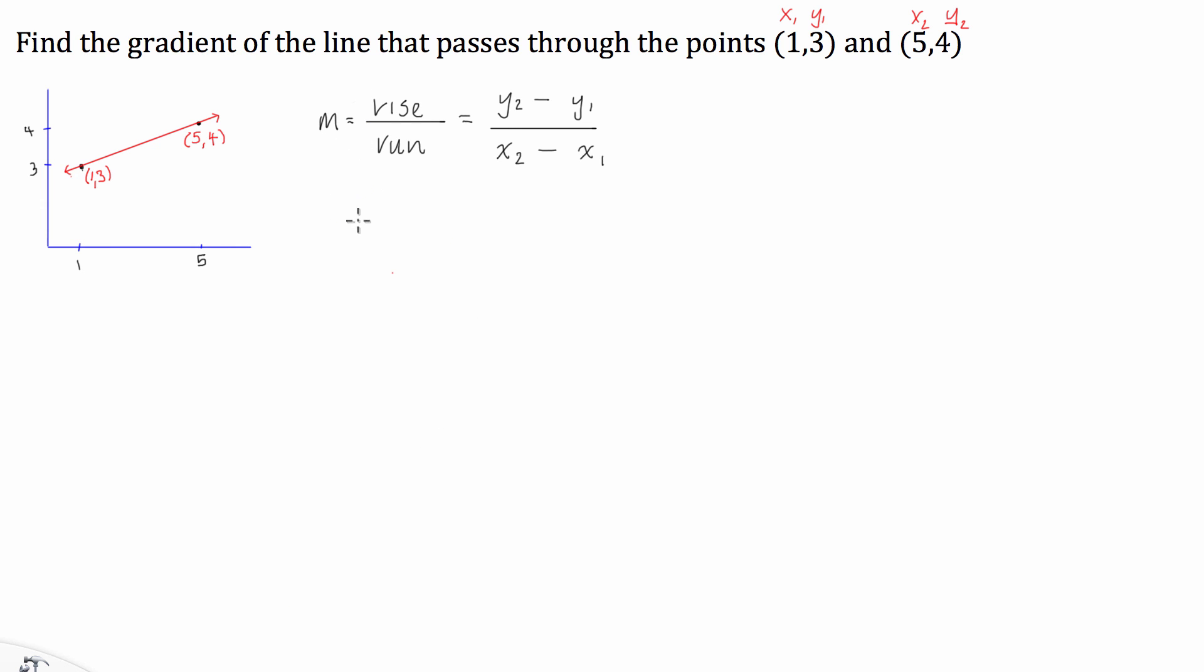So, we can then just go straight to calculating the gradient, so m is equal to y2, which is 4, take y1, which is 3, divided by x2, which is 5, subtract x1, which is 1. So, 4 take 3 is 1, 5 take 1 is 4...